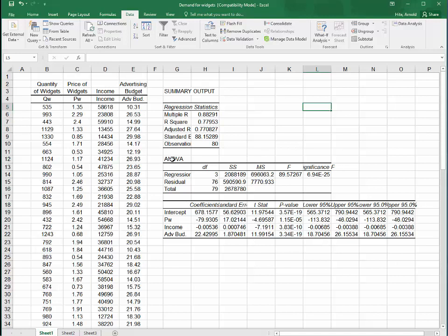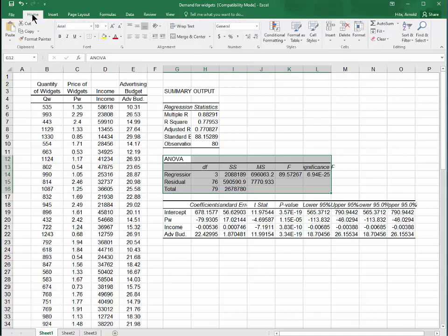In business, we don't use ANOVA too much. So you can just ignore this part. You can ignore that. We don't need it. What we need is this. This stuff right here. The intercept PW income advertising budget. Here's our coefficients. And eventually we'll need the p-values. And then we need some of this stuff up here.